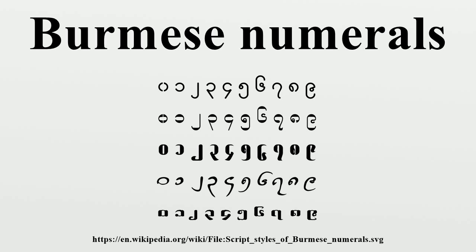Numbers in the tens place shift from 2, except in numbers divisible by 10. In typical speech, the shift goes further. Numbers in the hundreds place shift from 2, except for numbers divisible by 100. Numbers in the thousands place shift from 2, except for numbers divisible by 1000.